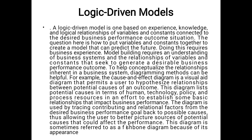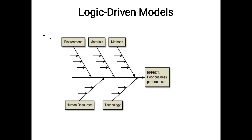To help conceptualize the relations inherent in a business system, diagramming methods can be helpful. For example, a cause and effect diagram is a visual aid diagram that permits you to use a hypothesis relationship between potential cause and an outcome. Here I have shown the cause and effect diagram. Environment, material, methods, human resource, and technology are the causes. As a result, the effect is poor business performance.